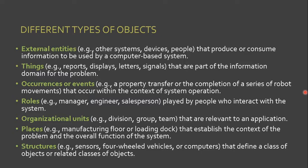Analysis classes can manifest themselves in one of these ways — these are the different types of objects. We have external entities, which produce or consume information to be used by a computer-based system. Good examples are third-party systems or applications, devices, and people. We also have things — things that are part of the information domain for the problem — such as reports, printed reports, displays, letters, and signals.